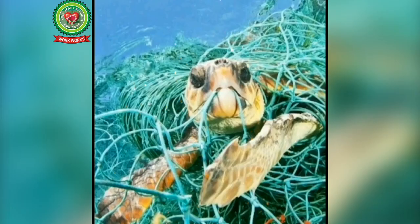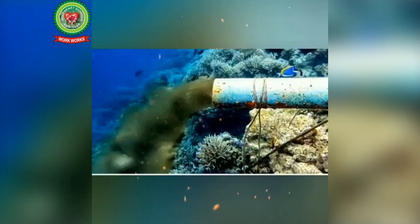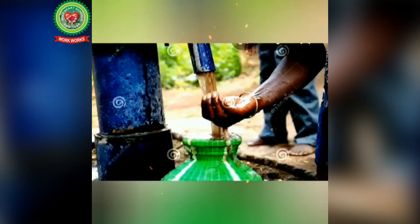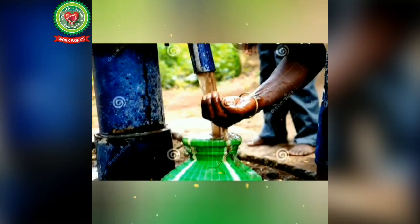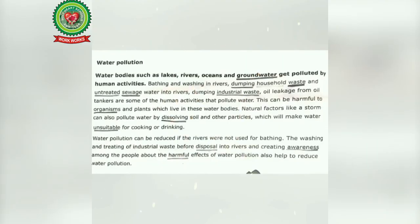Polluted water is very harmful for animals and plants which live in water bodies. It is also unsuitable for us for cooking, drinking, etc. Water pollution can be reduced if rivers were not used for bathing and washing, and if industrial waste is treated before disposal into rivers.